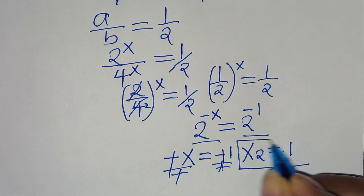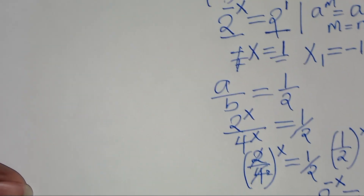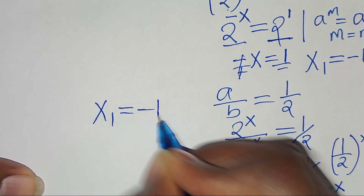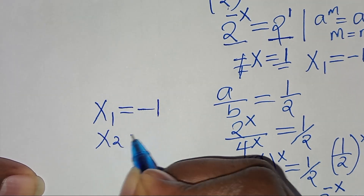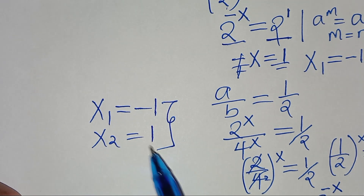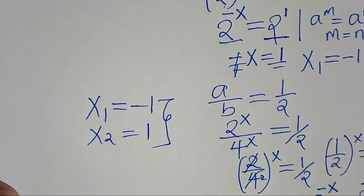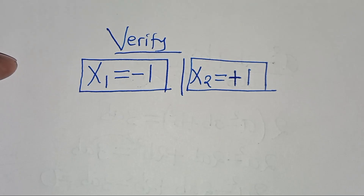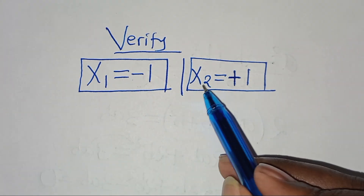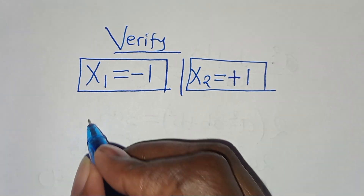So we have two values of x: x₁ is equal to minus 1, and x₂ is equal to 1. The next step is to verify that these two values of x satisfy the original equation. Let's verify that x₁ equals minus 1 and x₂ equals positive 1 both satisfy the equation.